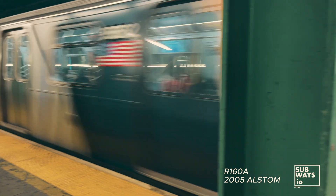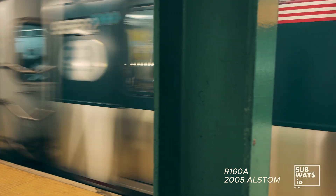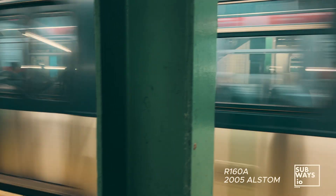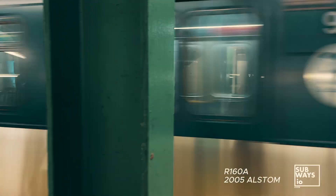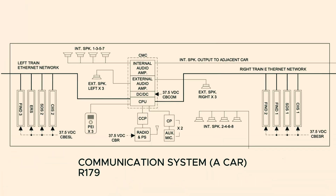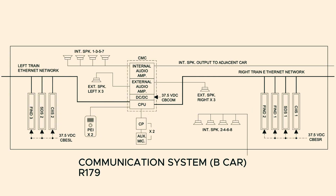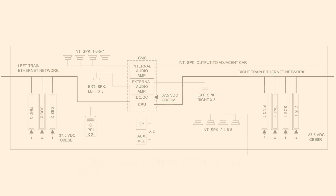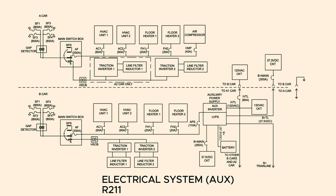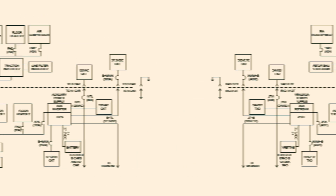The AAS is one component of the train's broader communications system, which functions as a subsystem within the rail car. It operates alongside other key systems, such as information, auxiliary electrical, propulsion, door control, and train control and management, among others.